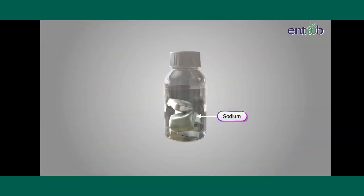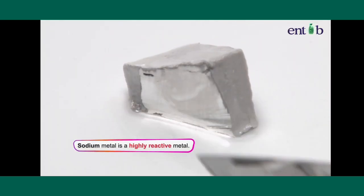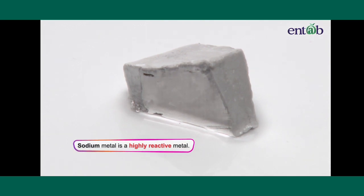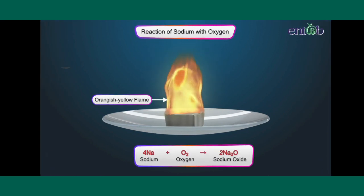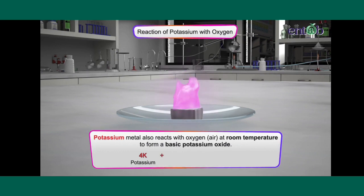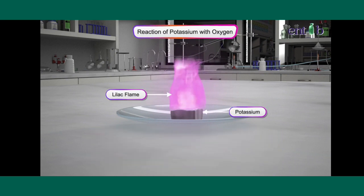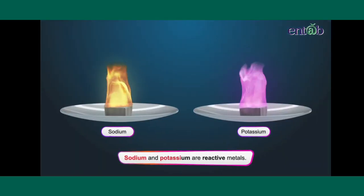Sodium metal is stored under kerosene because it is a highly reactive metal that readily reacts with the oxygen in air. It burns with a bright white-orangish flame. Potassium metal also reacts with oxygen at room temperature to form basic potassium oxide, burning with a bright lilac flame. Sodium and potassium are highly reactive metals.